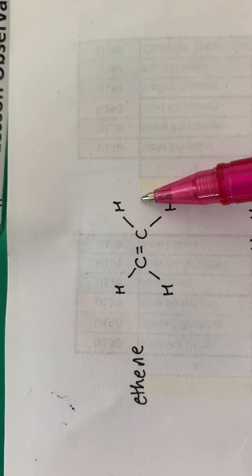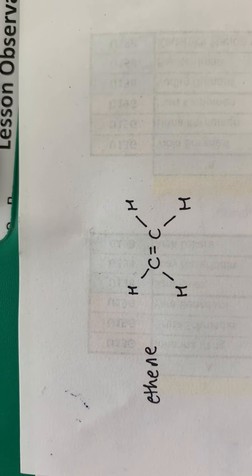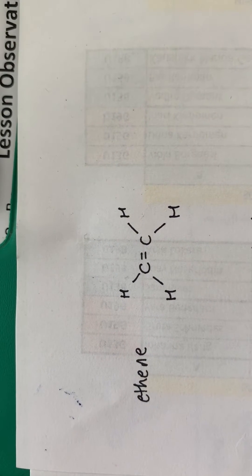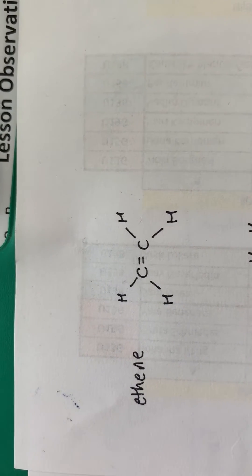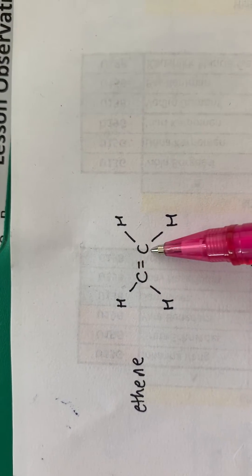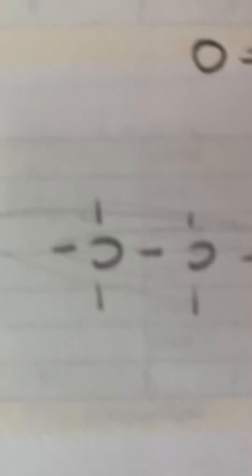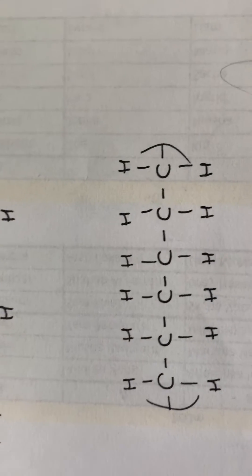When it comes to drawing polymers, I'd recommend always drawing them in an H-shape and putting your double bond in the middle of those two carbons. So rather than drawing it like this, the first thing I would do is always draw like this. Then I think it makes it quite easy to draw the polymer.